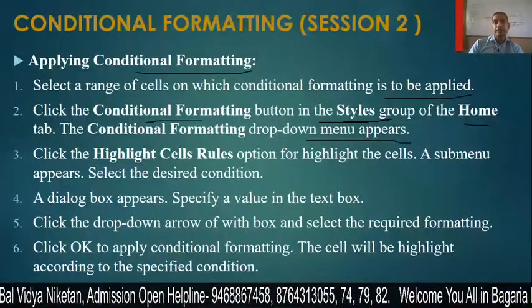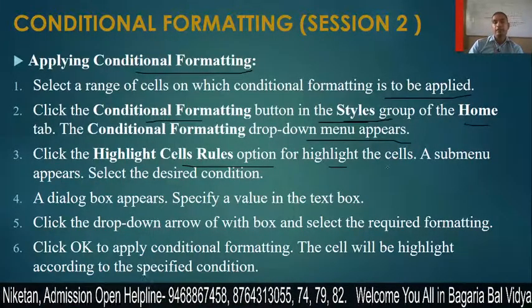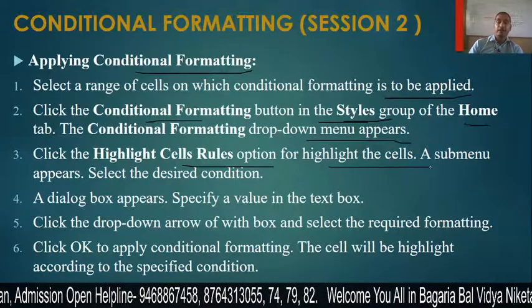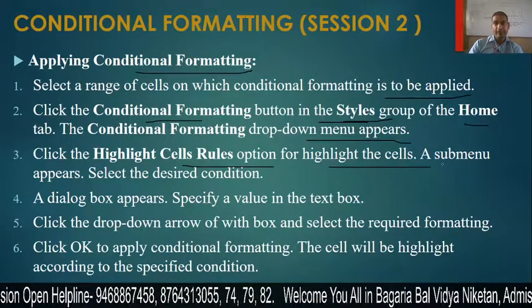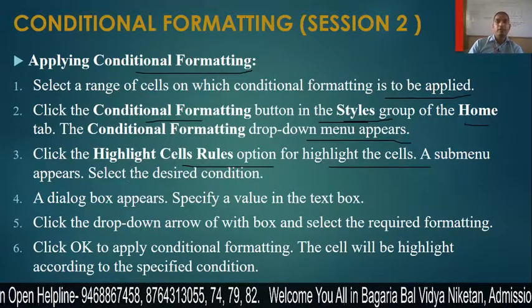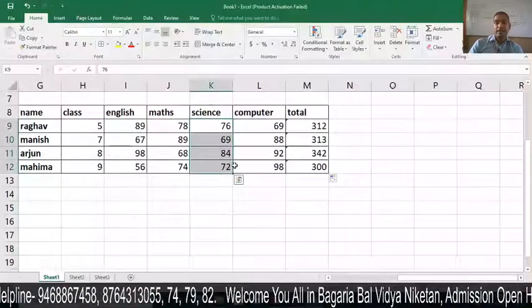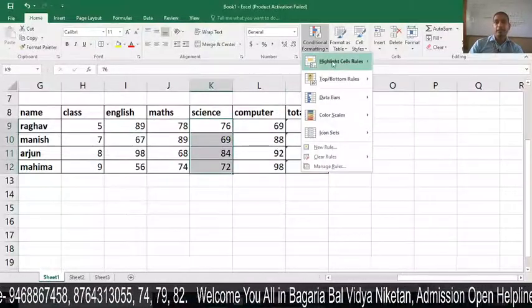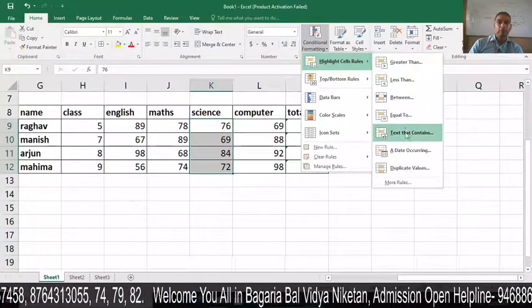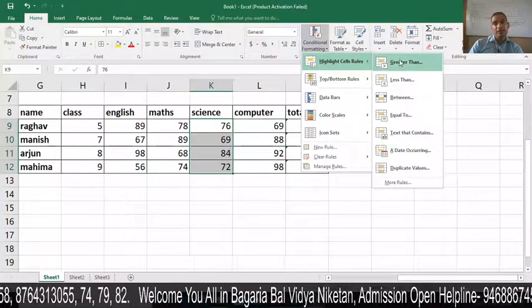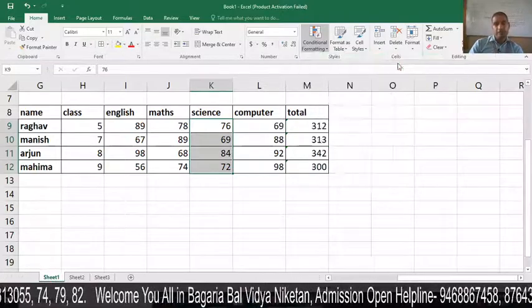Click the Highlight Cell Rules option to highlight cells. A submenu appears with different Highlight Cell Rules options. Select the desired condition from the available options.